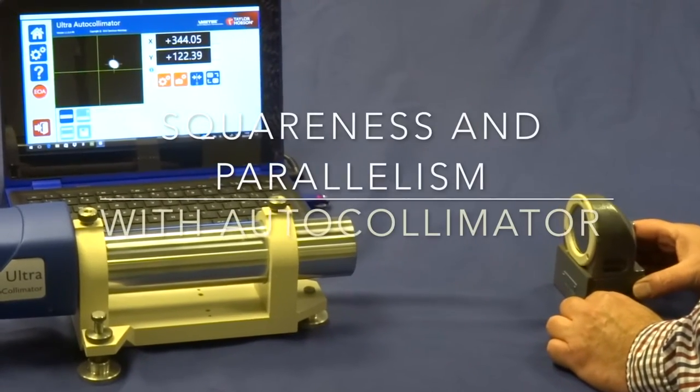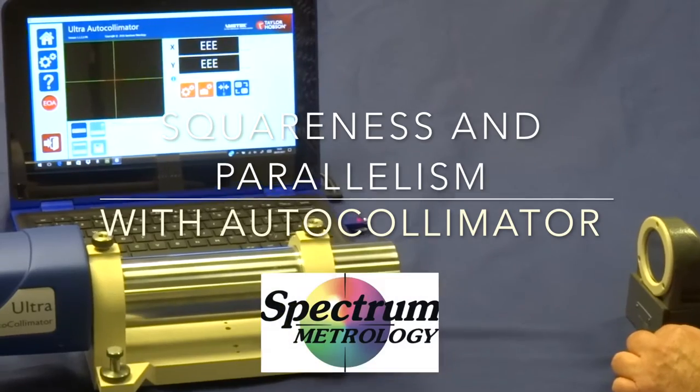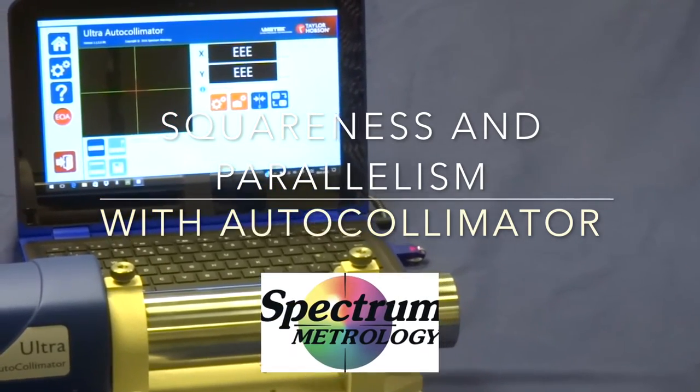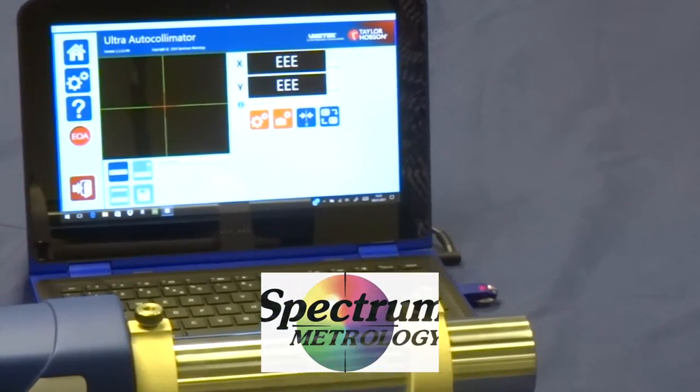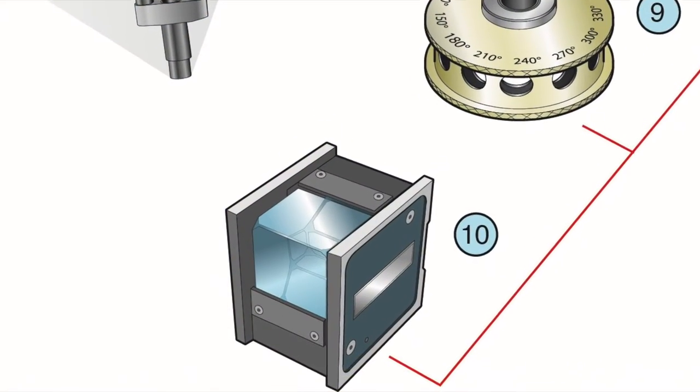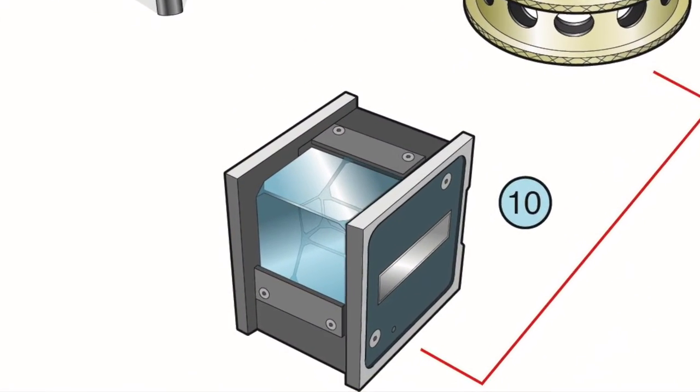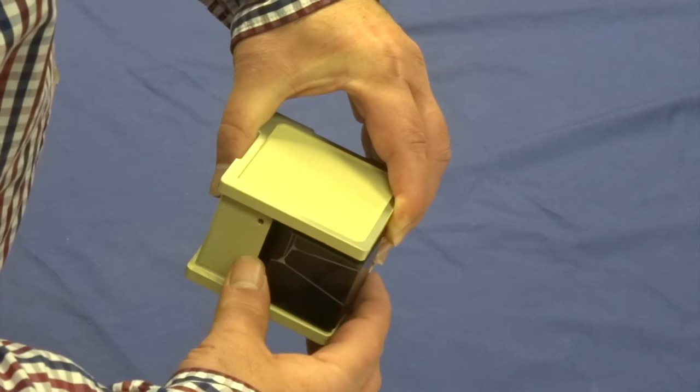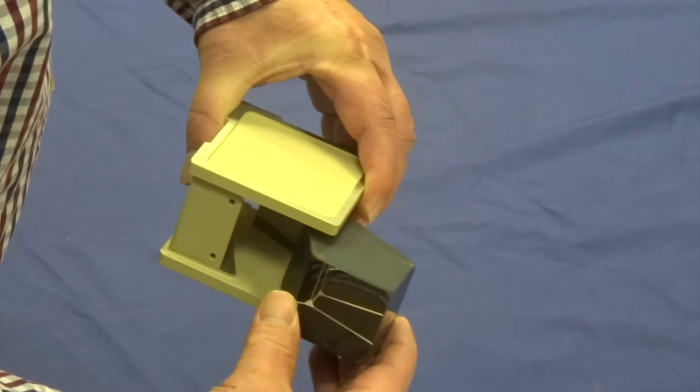Thank you for joining us. To measure squareness and parallelism with an autocollimator, we use an optical square or pentagonal prism. This will bend the light through 90 degrees within one second.